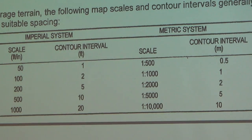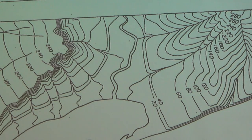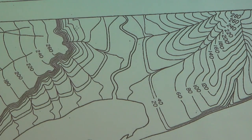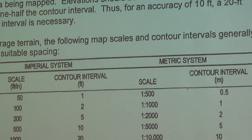Whatever contour interval you choose, you need to be able to interpolate between lines. I can find where 170-foot elevation is, or even 30-foot elevation. The key point: elevation should be able to be interpolated within one half the contour interval. So if you want an accuracy of 10 feet, you choose a contour interval of 20 feet — that allows you to find the halfway point.